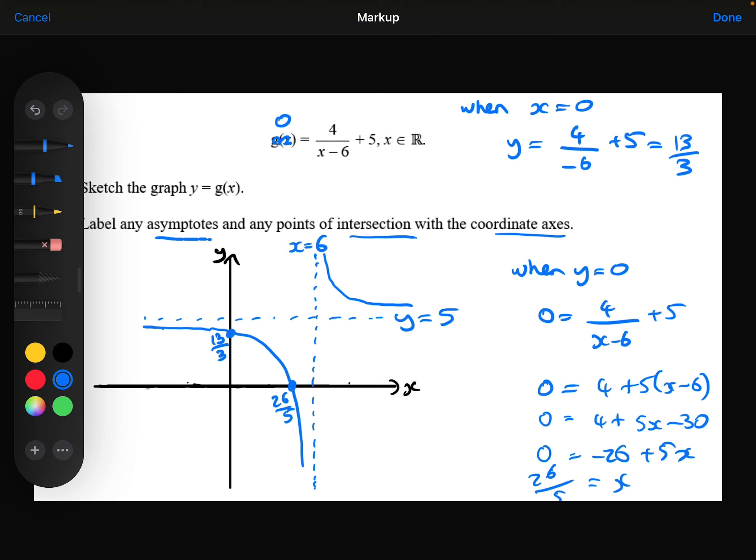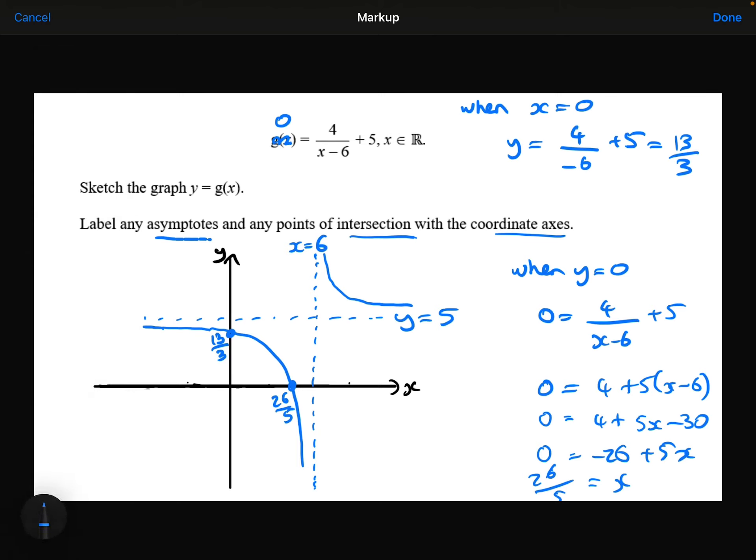And there we go. I've drawn my graph, I've drawn on the x-intercept, I've drawn on the y-intercept, I've drawn on the two asymptotes. We're done.